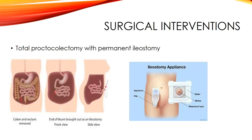Surgical interventions for ulcerative colitis include total proctolectomy with permanent ileostomy. Patients may also have colostomies or ileostomies that can be reversed. Surgery involves cutting out the area with scar tissue or the most problematic diseased bowel, then providing either a colostomy or ileostomy depending on where the diseased bowel was removed. Surgery is always the last option.